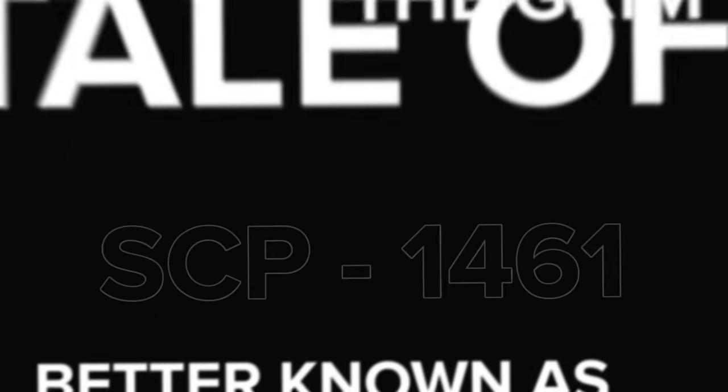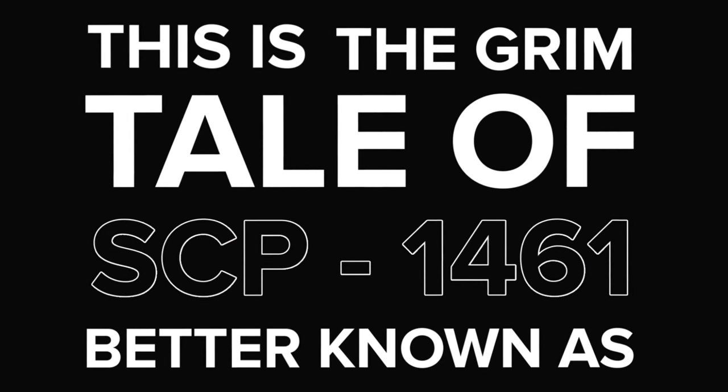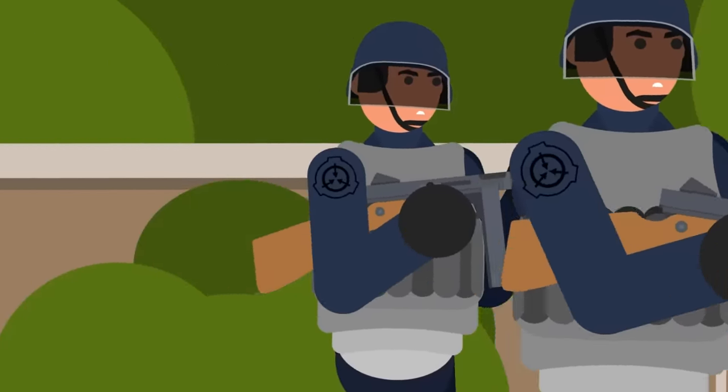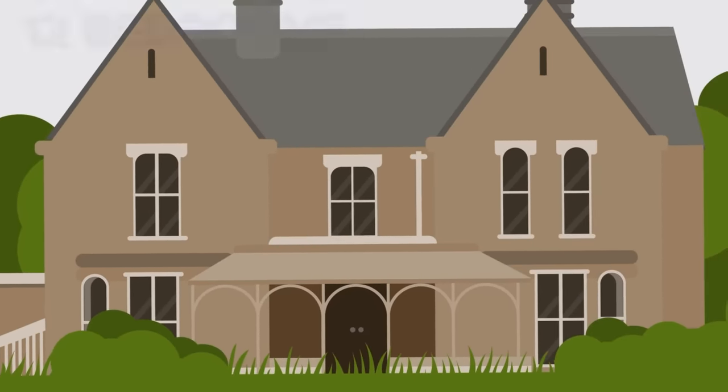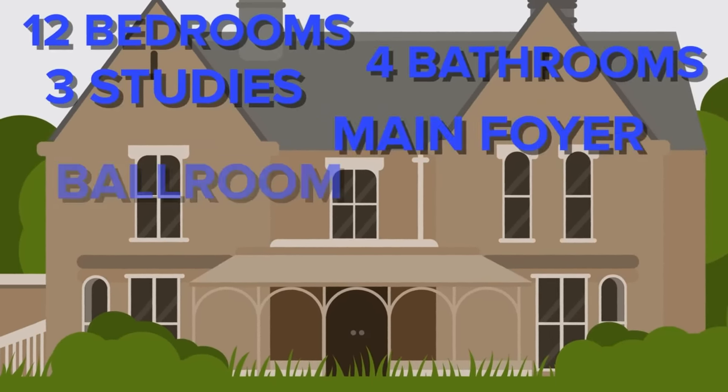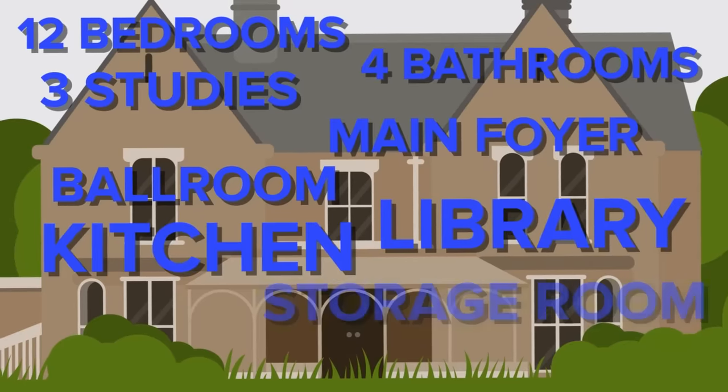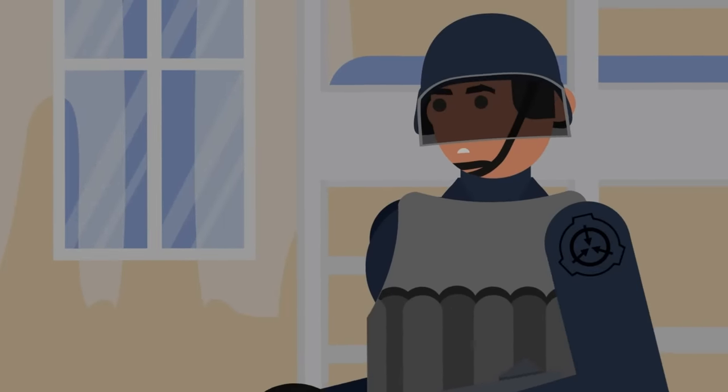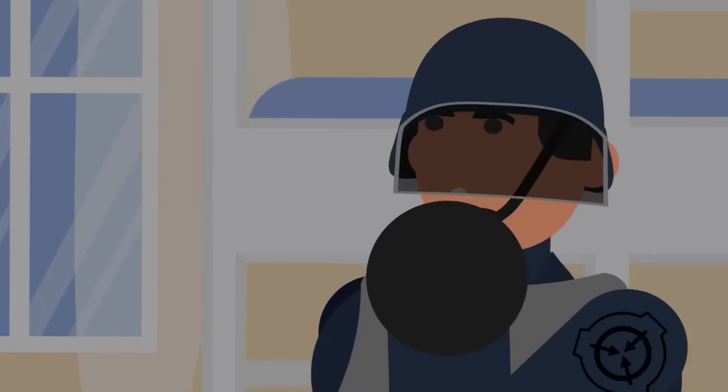This is the grim tale of SCP-1461, better known as The House of the Worm. When the manor house reappeared after its eleven-day absence, the Foundation zeroed in, sending agents inside to investigate. It was a two-level dwelling complete with twelve bedrooms, four baths, three studies, a main foyer slash ballroom, a library, a kitchen, and a pantry basement. The Foundation observed that a number of these rooms had been fitted with rows of bunk beds, similar to a boarding house or barracks. Only later would they understand why.